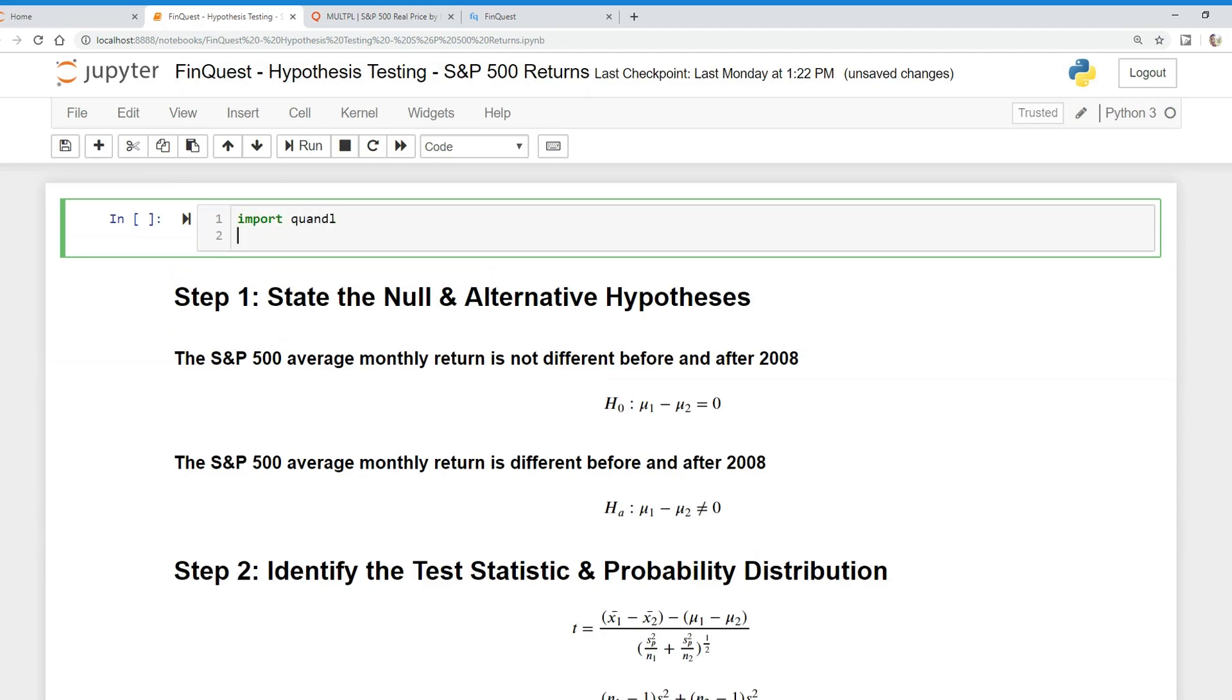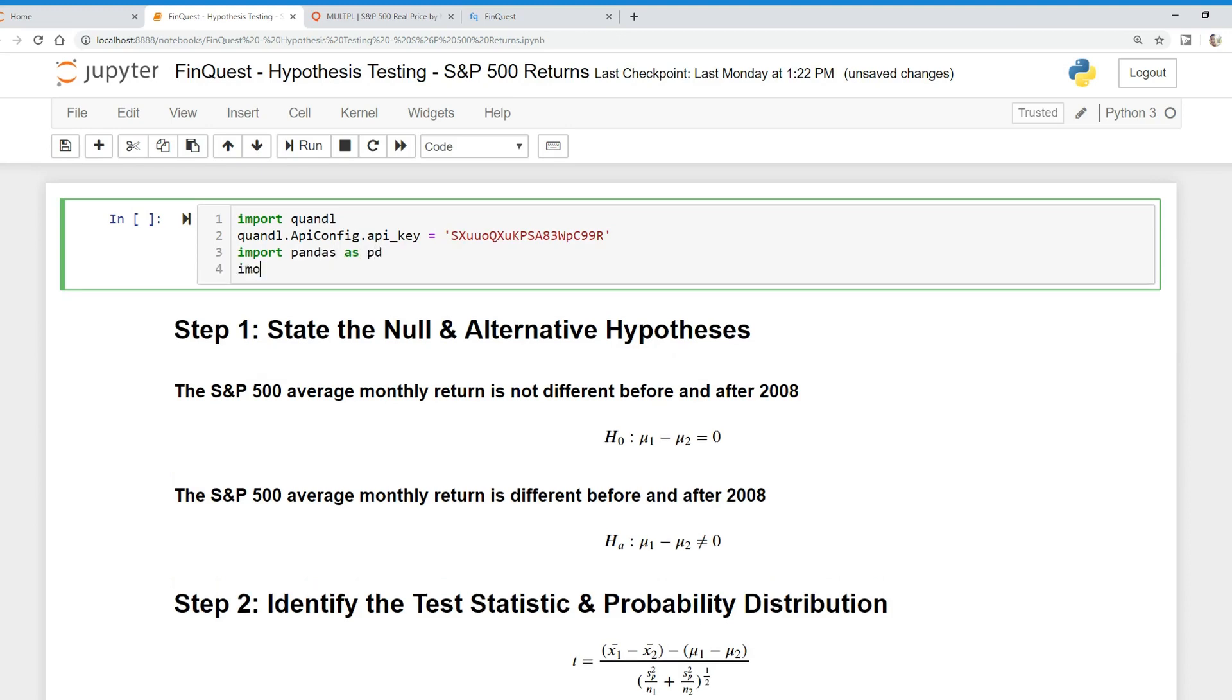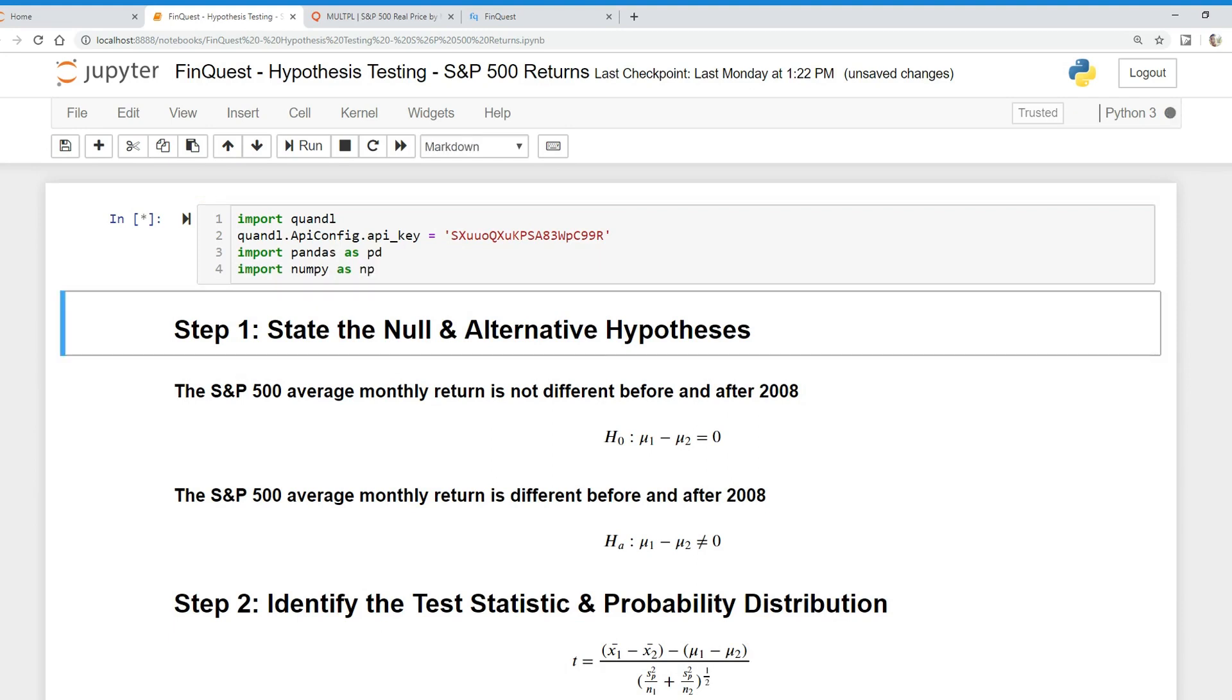First, we're going to import Quandl and say quandl.ApiConfig.api_key and paste in my API key here. We're just going to need two libraries today: import pandas as pd and import numpy as np. So run that.